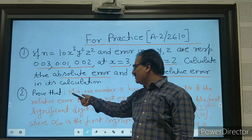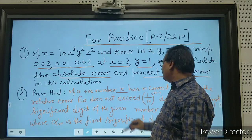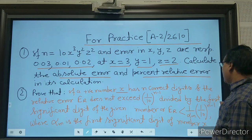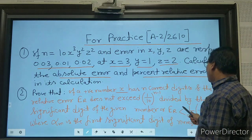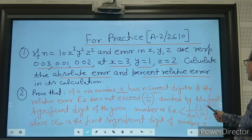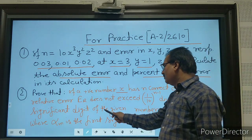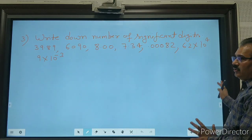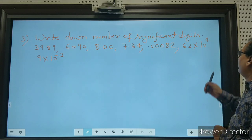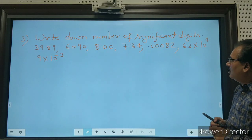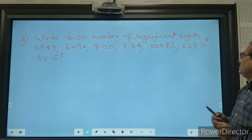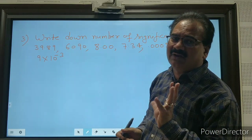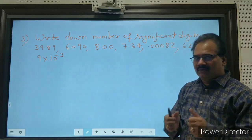The second exercise: prove that if a positive number x has n correct digits, the relative error does not exceed 1/(10^(n−1)) divided by the first significant digit of the given number. Also, find the number of significant digits in: 39.8960, 8.007, 0.00083, 6.2×10^4, and 9×10^(−3). Stay safe, thank you.